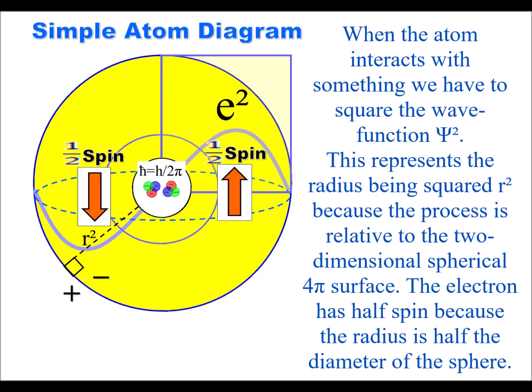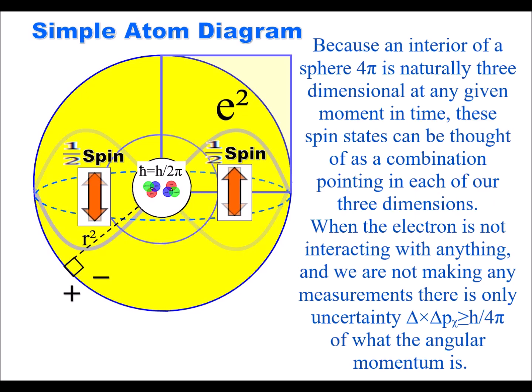This is represented in the diagram by two red arrows pointing up and down. At any given moment in time, these arrows can be thought of as a combination pointing in each of our three dimensions.